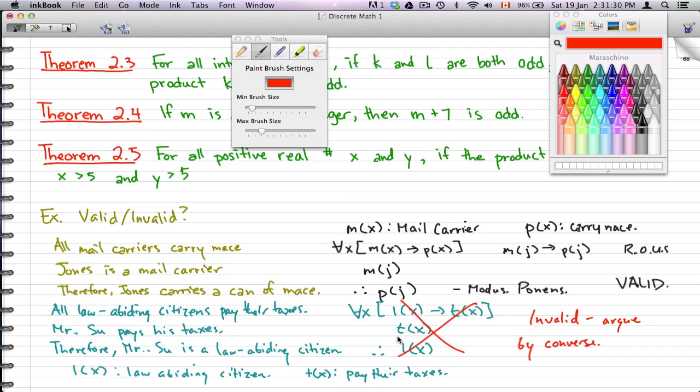This modus ponens does not work here because LX implies TX, TX does not imply or that does not give the result. Therefore Mr. Su is the law-abiding citizen. For all we know, Mr. Su could pay his taxes and he would be a freaking drug lord.